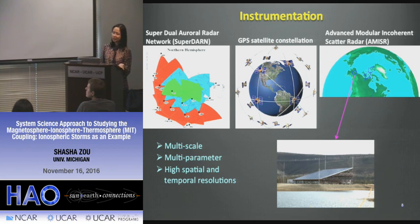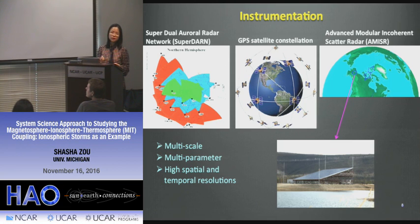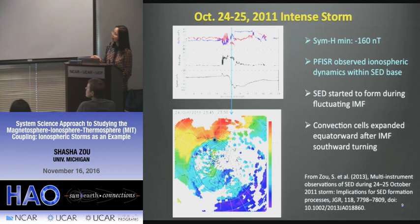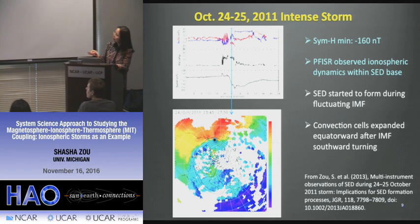In our study, we examined all moderate and intense geomagnetic storms since around 2007, searching for events where the AMISR radar could be either underneath the SED base region or underneath the SED plume to measure local dynamics. The first storm was an intense event on October 24-25, 2011 — the largest that year — with Sym-H minimum reaching minus 160 nT. It's a very nice ICME-triggered storm: after the shock, fluctuating IMF for a couple of hours, then relatively steady southward IMF inducing the intense storm. The TEC distribution shows the AMISR underneath the SED base region.